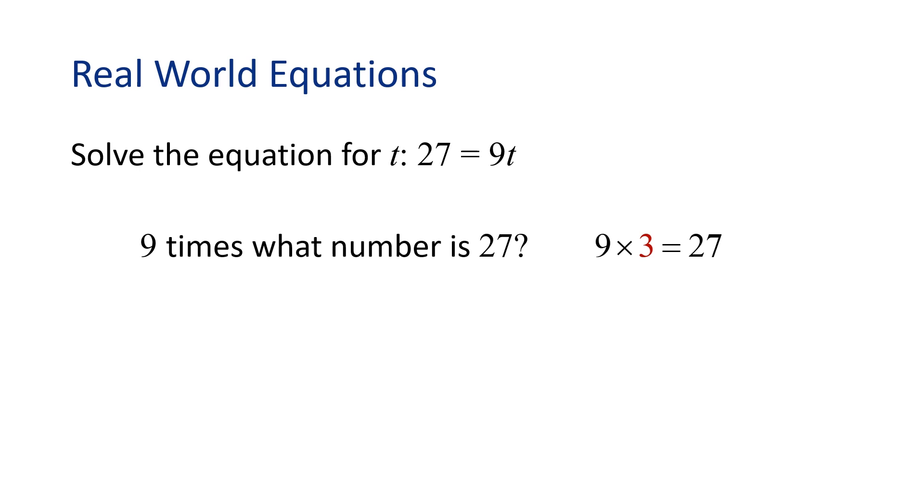Solving the problem using algebra, we would divide both sides by 9. And this will isolate the variable t. We also find that t is equal to 3. See how there's more than one way to solve the same problem?